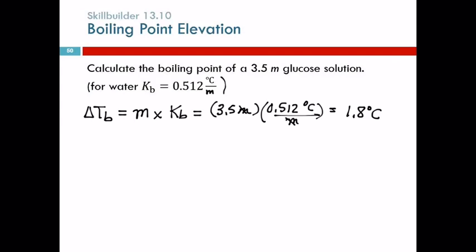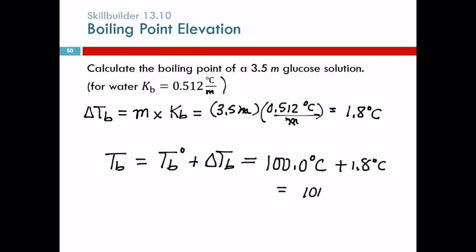So this is 2 sig figs 1.8 degrees Celsius. Is that the answer? No. That's the change in the boiling point. What's the actual boiling point? What did it start out with before we threw sugar into the water? What's the boiling point of water? 100. So for the boiling point we have to take the normal boiling point and add the change. So 100 degrees Celsius plus the 1.8, and we get 101.8 degrees Celsius. It will boil at a higher temperature.